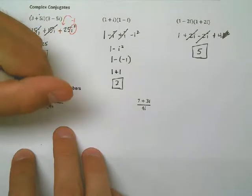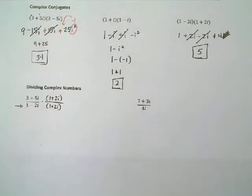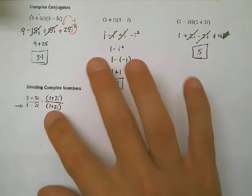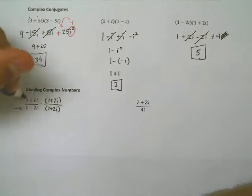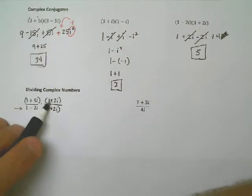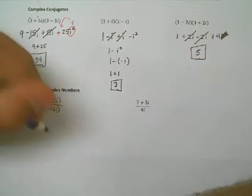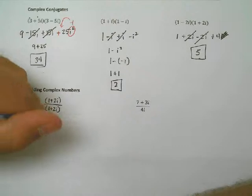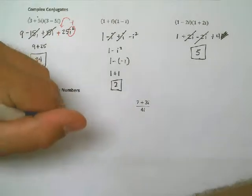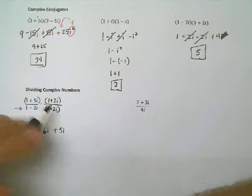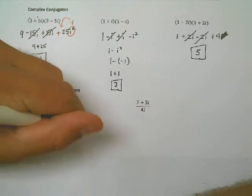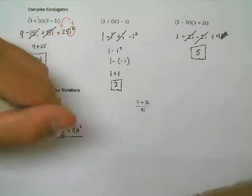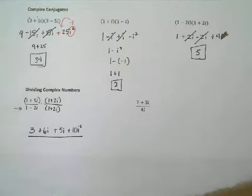This is the same thing as we do whenever we want to get rid of square roots. It's kind of like rationalizing the denominator. We want to get rid of the i in the bottom. So what we do is we multiply both top and bottom by the complex conjugate of the denominator, 1 plus 2i in this case. Now the top becomes a foil problem. 3 plus 5i times 1 plus 2i. Multiply straight across the top. First terms, 3 times 1 is 3. Outer terms, 6i. Inner terms, 5i. Last terms, plus 10i squared. On the bottom, 1 plus 2i, 1 minus 2i, we just did up here, that ends up being 5 after you foil it out.